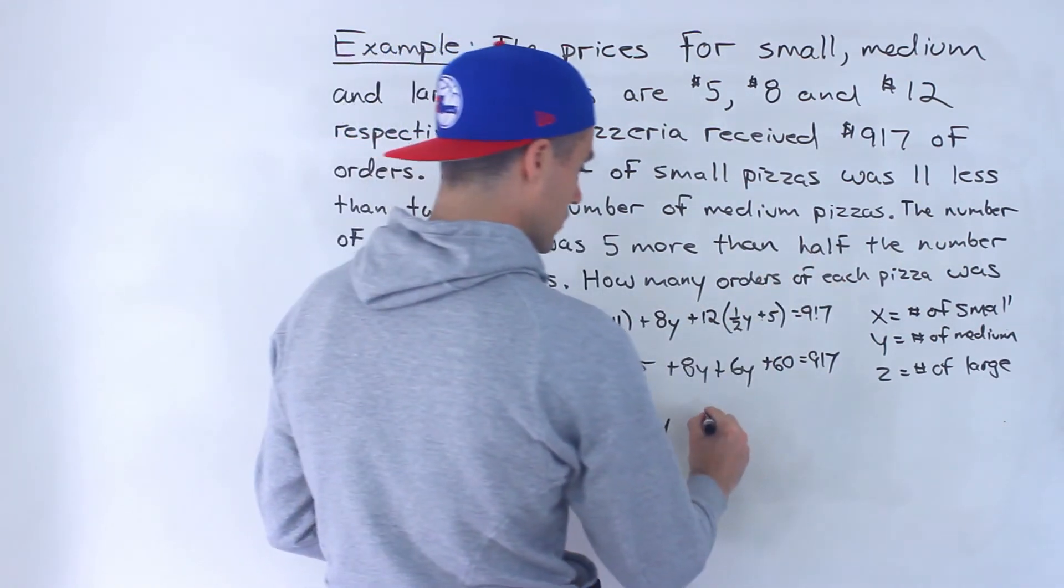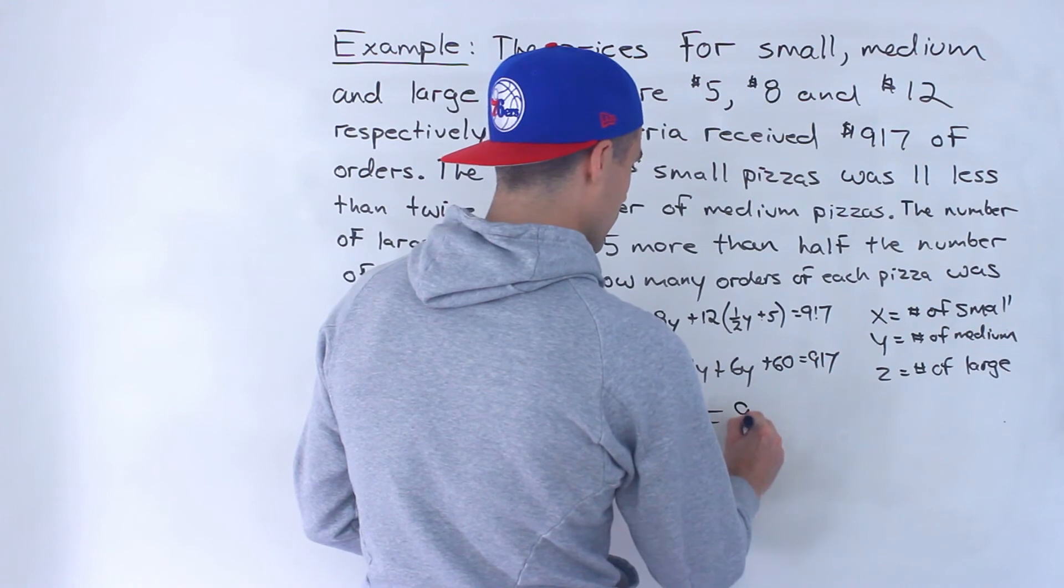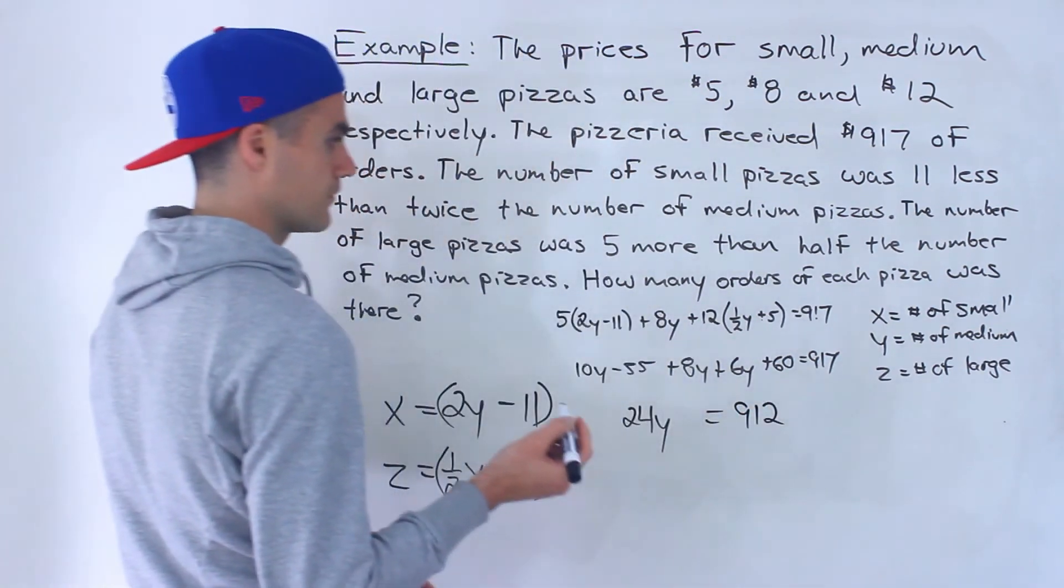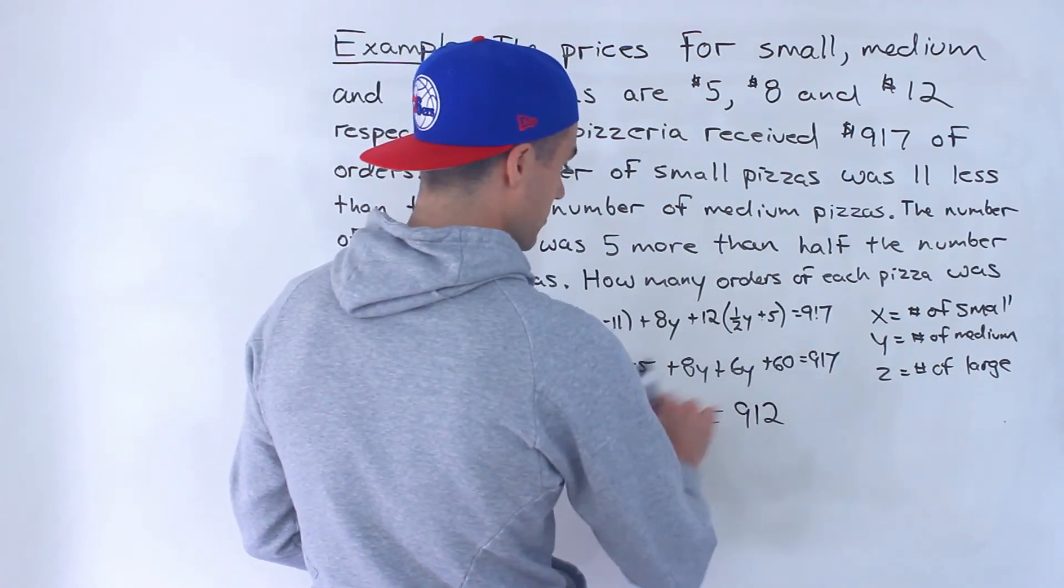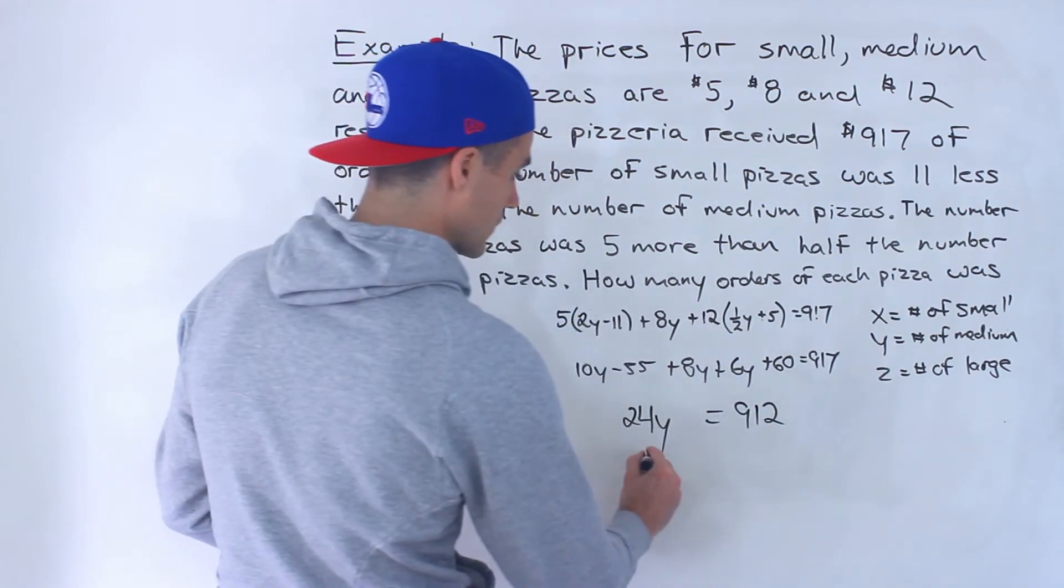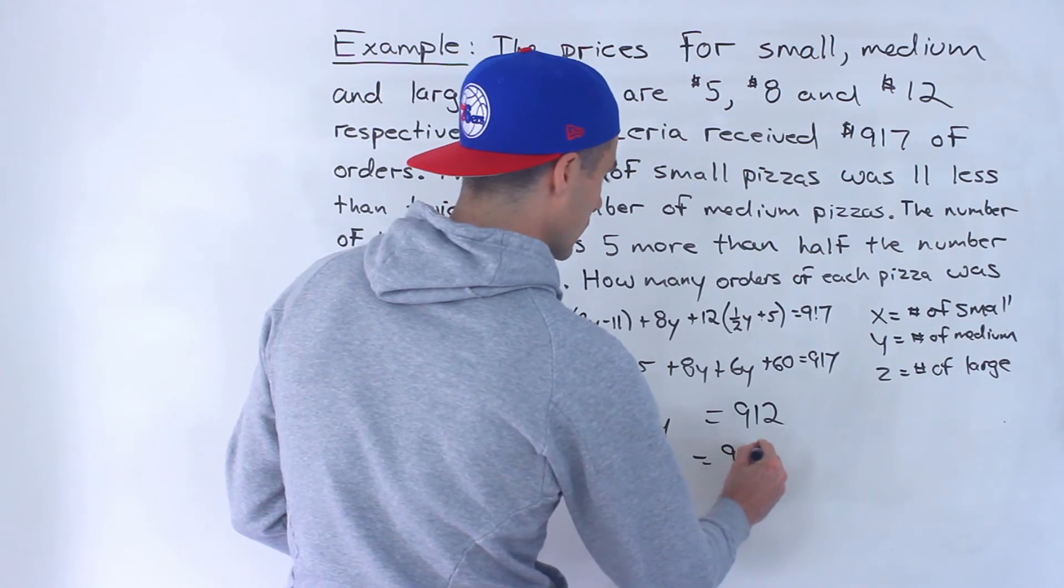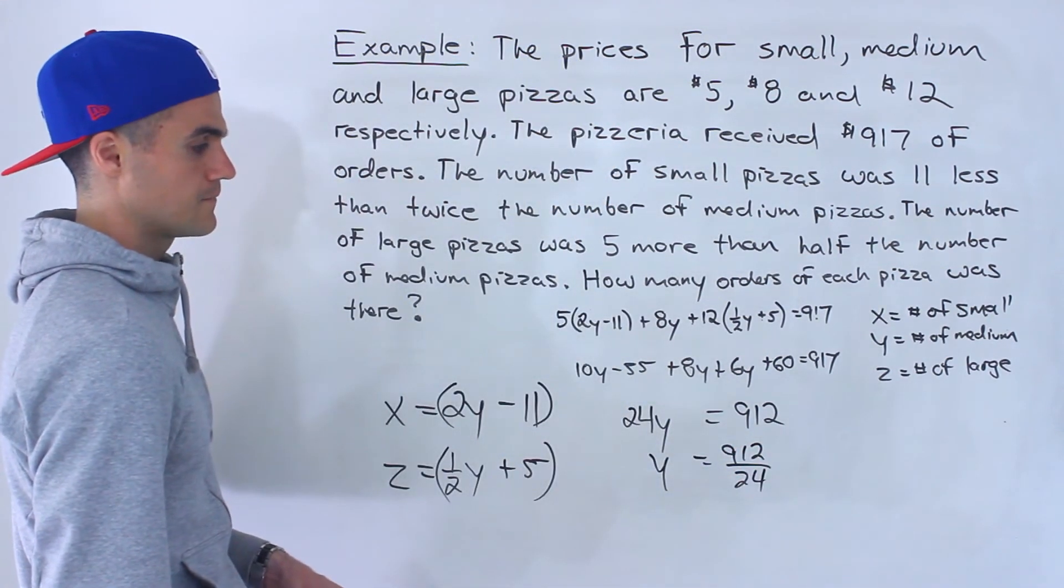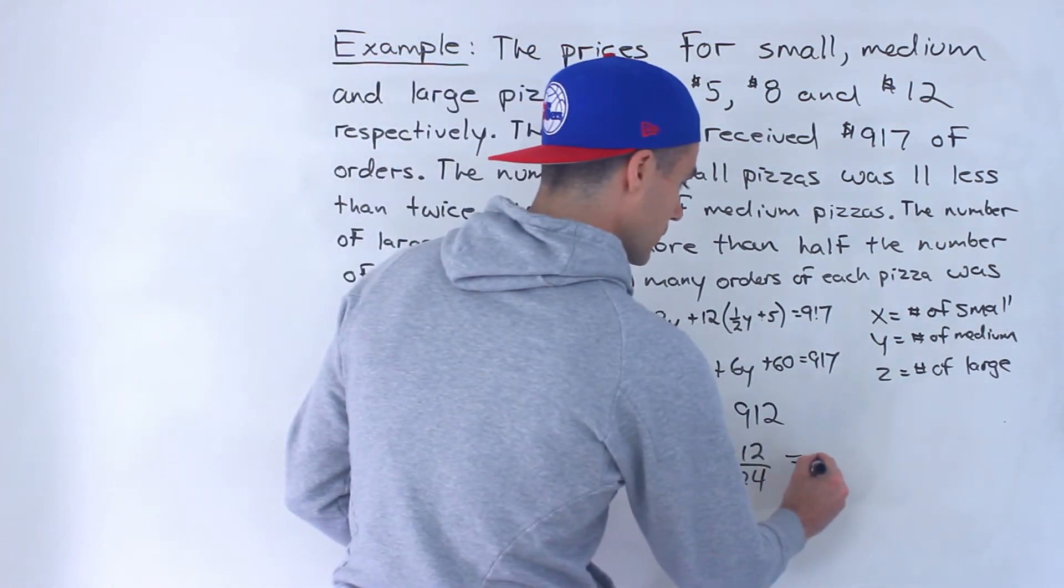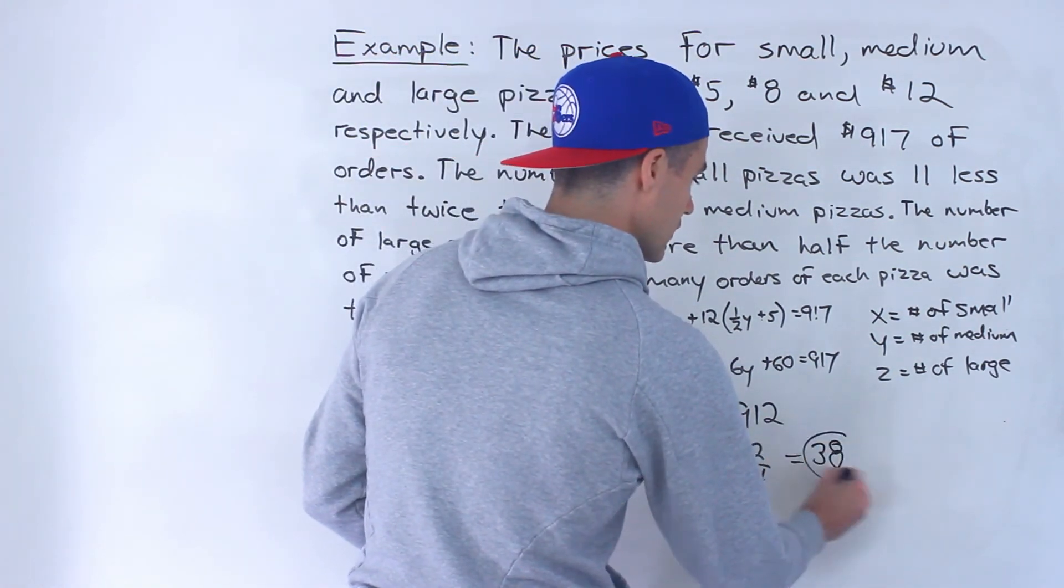Bring the positive 5 over, we would end up with 912, like that. Or 917 minus 60 plus 55 would give us 912. So then y would be 912 divided by 24. And when we do that, we would end up getting 38.